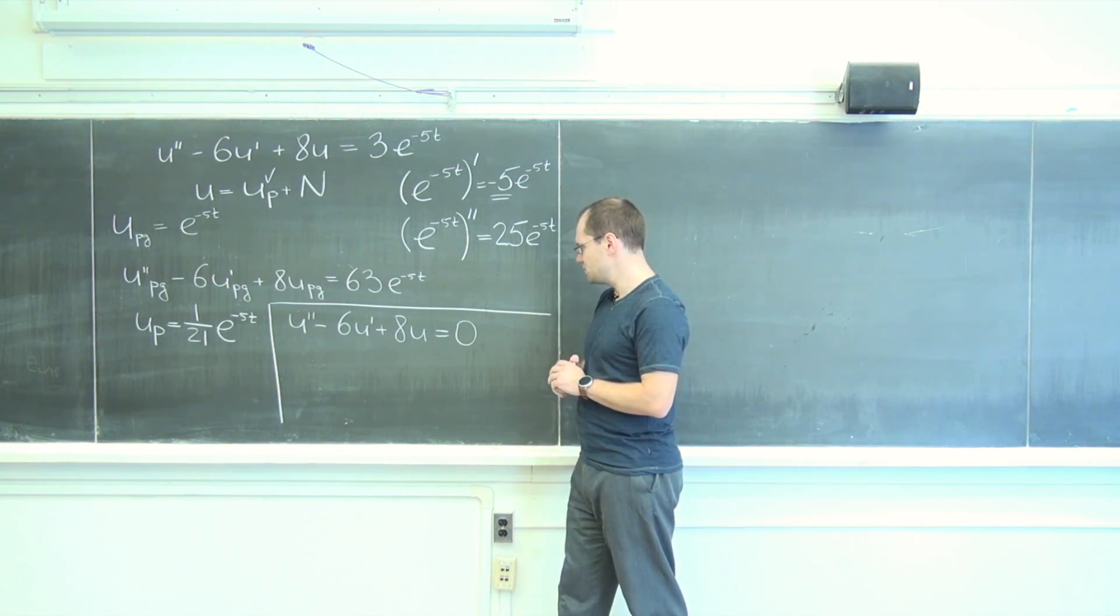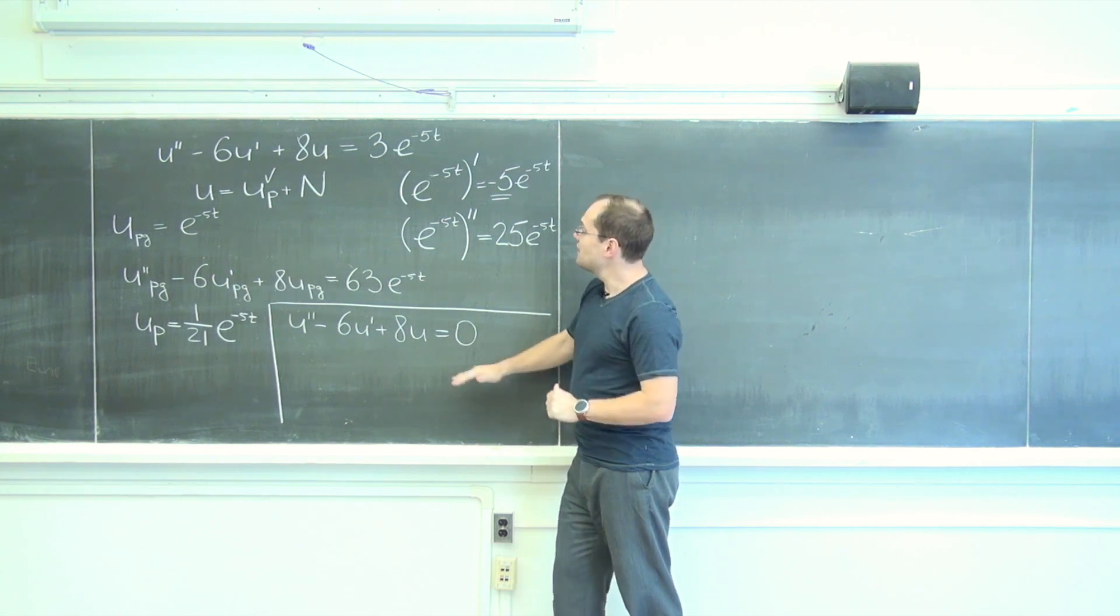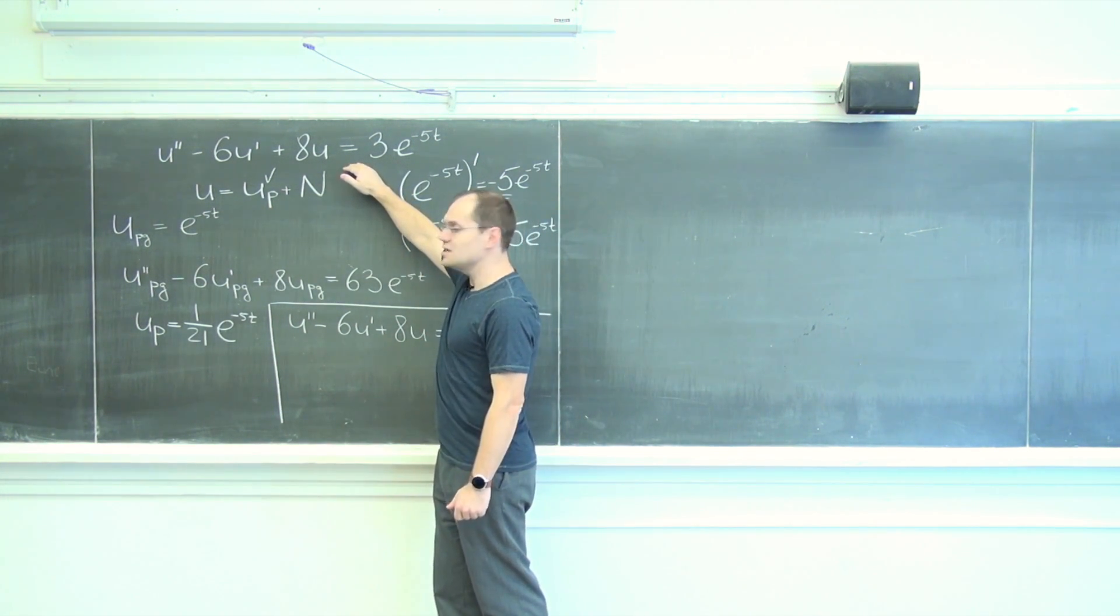For some reason, I prefer saying homogeneous. Maybe it's a little bit more British, I don't know, but I'm in the habit of saying homogeneous. And this equation is called inhomogeneous.